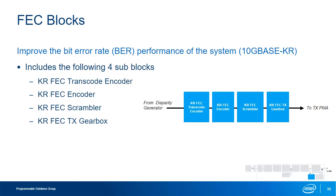The FEC block is made up of four sub-blocks: the KR-FEC transcode encoder, the KR-FEC encoder, the KR-FEC scrambler, and the KR-FEC gearbox, designed in accordance with the 10G KR-FEC and 40G KR-FEC sections of the IEEE 802.3 specification. Most data transmission systems such as Ethernet have minimum bit error rate requirements, but due to channel distortion or noise the required BER may not be achievable. Adding forward error correction improves BER performance by adding redundancy into the transmitted data, allowing errors to be detected at the receiver and possibly corrected without retransmission.